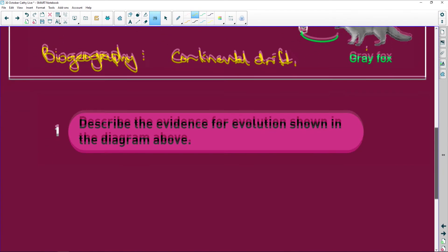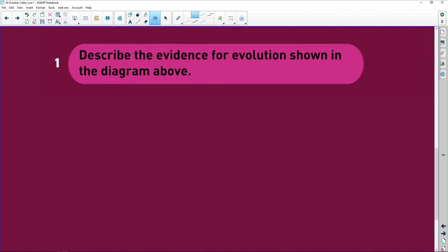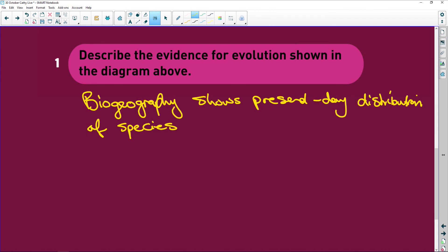So describe evidence for evolution shown in this diagram. I've already told you it is biogeography, which shows present day or current day distribution of species. In this case it's going to be species of foxes, but it could be camels, it could be whatever animal they use, that originated from a common ancestor.